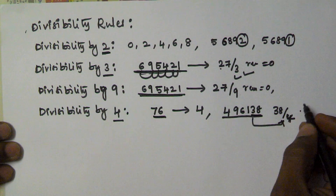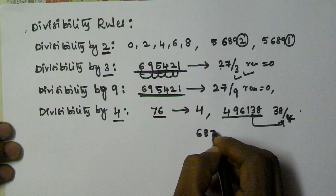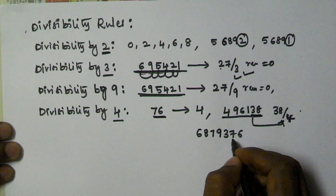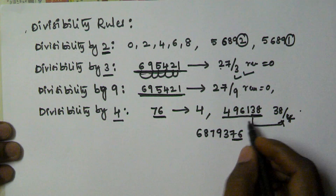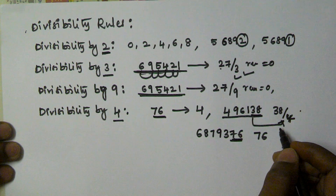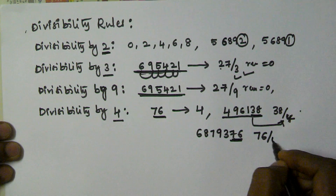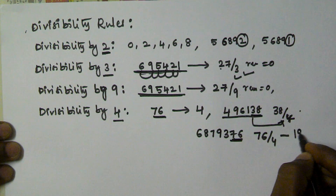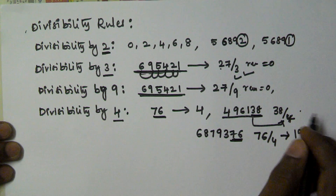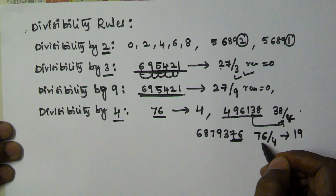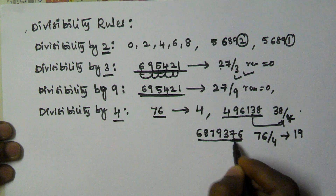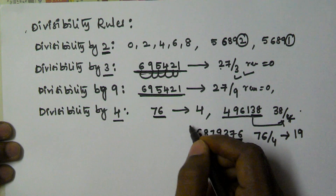Let's take another example: 6879376. To check divisibility by 4, we take the last two digits, which is 76, and check if it is divisible by 4. Since 76 divided by 4 gives remainder 0, the whole number 6879376 is divisible by 4.